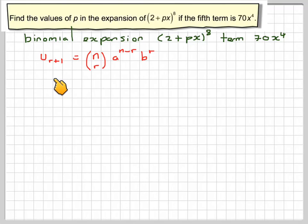Any particular term of a binomial expansion is given by nCr, a to the n minus r, b to the r. So in this case n is 8, a is 2, b is px and r is 4 because we want the term x to the fourth.